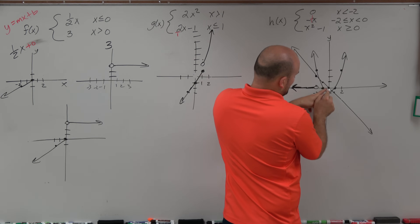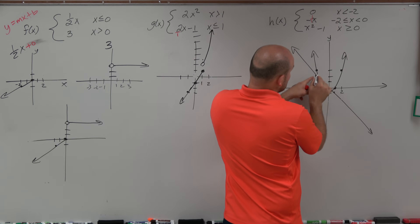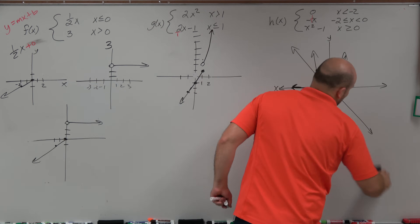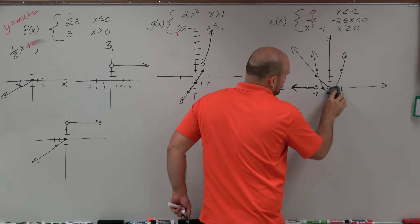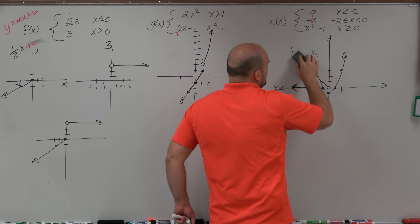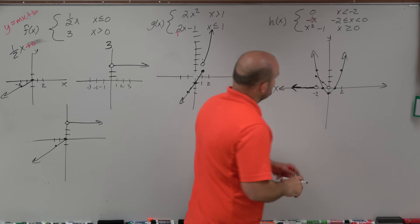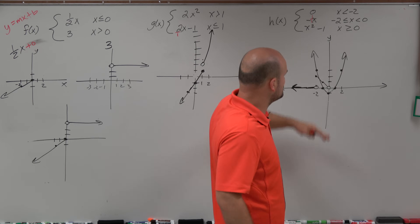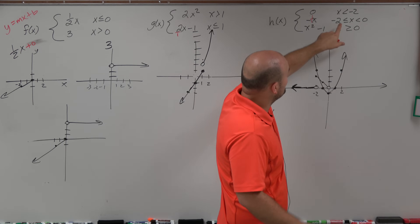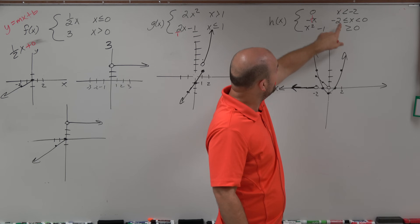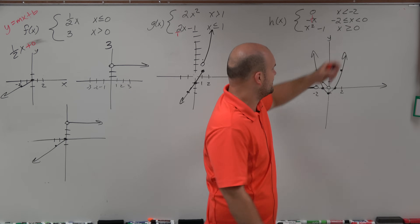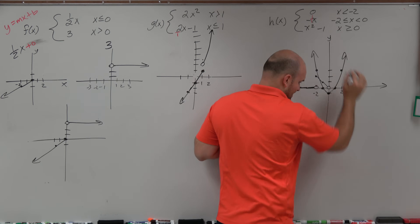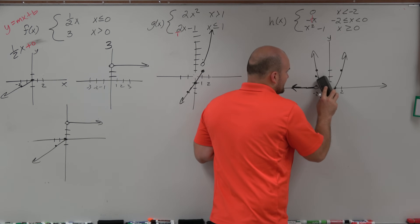So negative x is only between x equals negative 2 and x equals 0. Here at negative 2, it's a closed dot, but at 0 it's going to be an open dot — so everything else needs to be erased. Only x values between negative 2 and 0. A lot of people get confused with y values, but it's the x values that matter — when x is between negative 2 and 0. Then for x greater than or equal to 0, here's x at 0, and that's everything going positive, so we erase everything to the left of that.